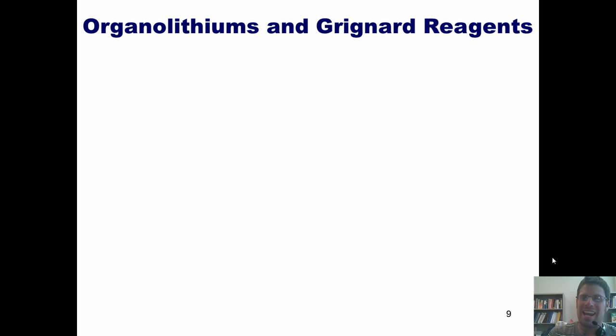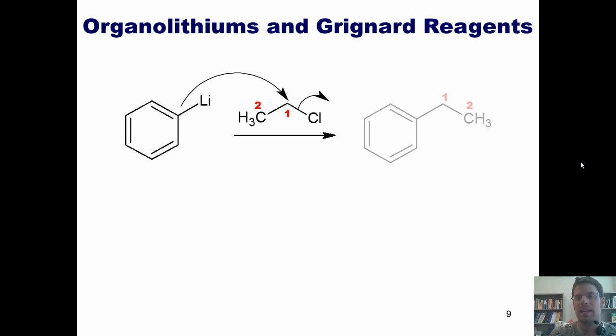Let's take a look at our organolithium examples. I've got my phenyl lithium here reacting with ethyl chloride. Once again, there's more or less an effective negative charge on this carbon in the ring. There's a partial positive charge on this carbon attached to the chlorine. And for the sake of keeping track of stuff, I'm going to number those carbons 1 and 2. The negatively charged carbon right here bound to the lithium thrusts its electrons down into carbon 1, kicking off the chloride, and gives me this product right here. You can pause it and look at it and make sure that it makes sense.